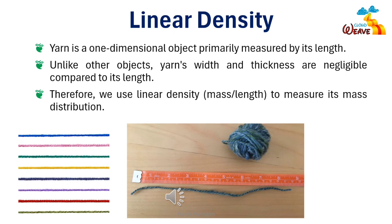Moving on to yarn, we encounter a unique situation. Unlike boxes or paper, yarn is a one-dimensional object primarily measured by its length. Its width and thickness are so minuscule compared to its length that we can essentially consider its volume or area to be negligible. Hence, we use linear density to measure the mass distribution of a one-dimensional object like yarn. We can calculate linear density by dividing the mass of the yarn by its length.